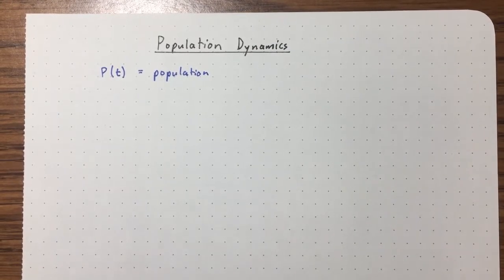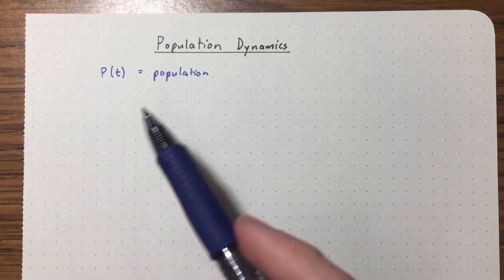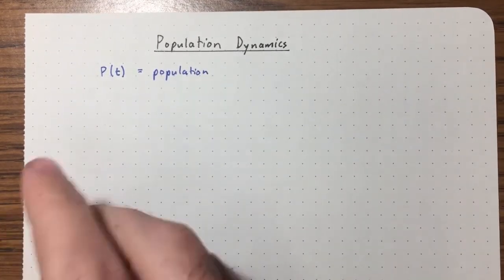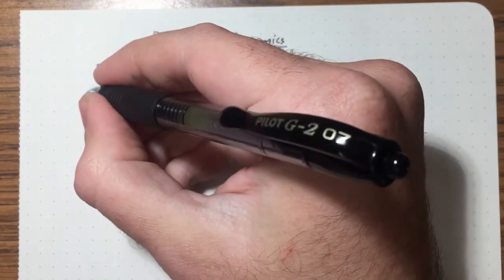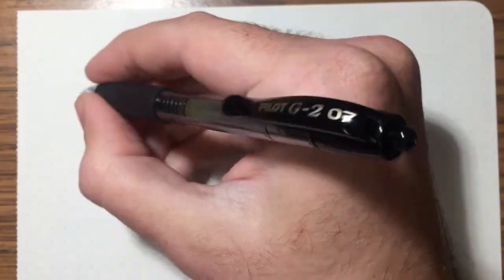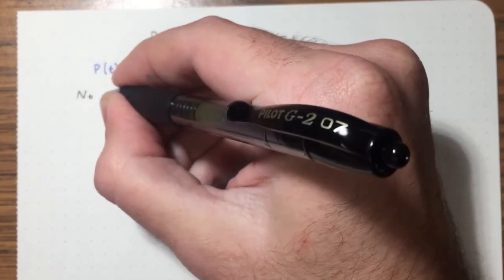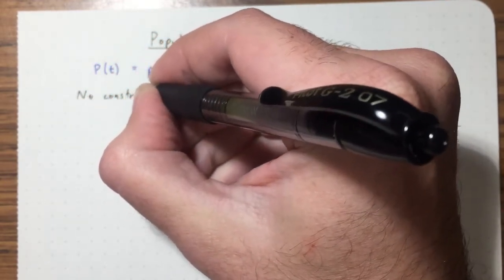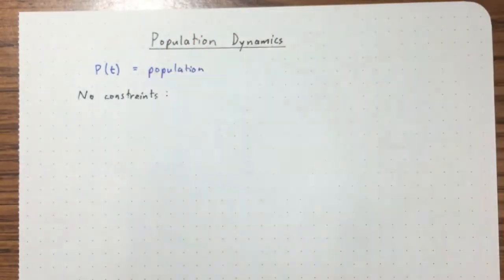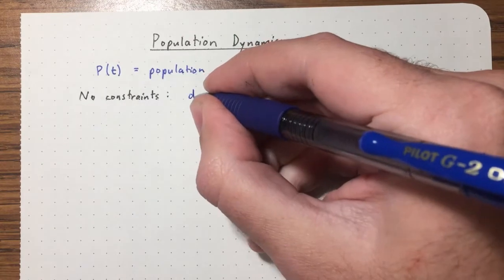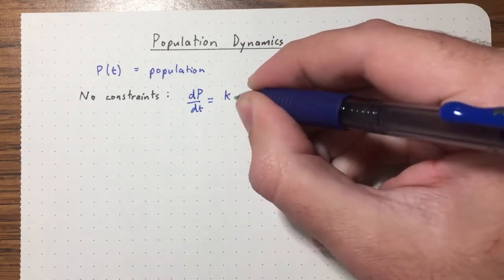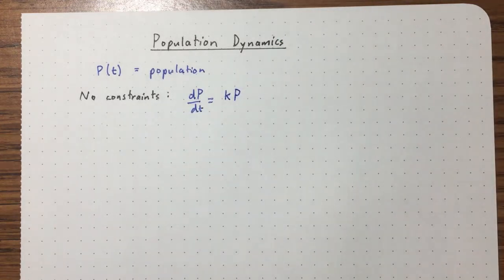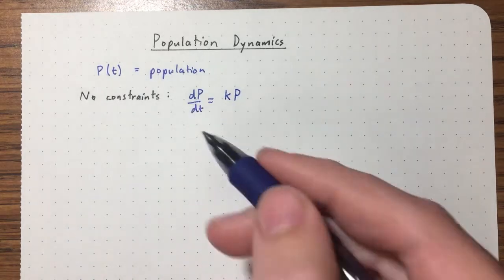In this lecture, we're going to apply the equilibrium analysis we learned from last lecture to population dynamics. We're going to let P(t) be a population. There are several models we can use to study a population. The simplest possible model would be no constraints whatsoever. In this model, we just say that the population grows at a rate proportional to current population size — setting a differential equation in words.